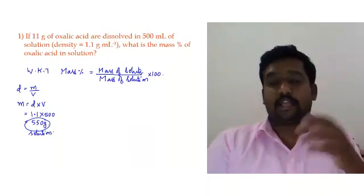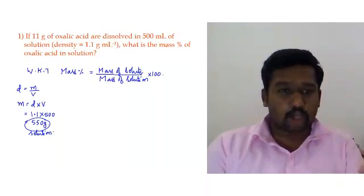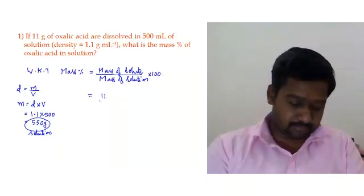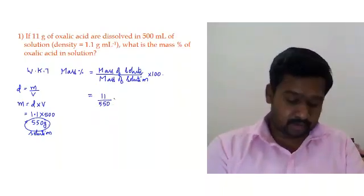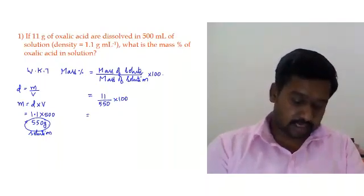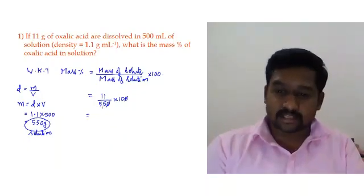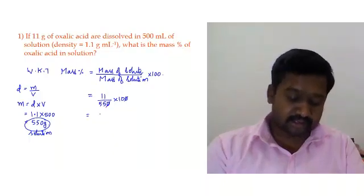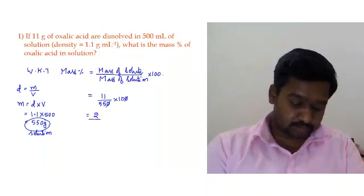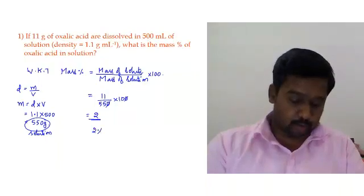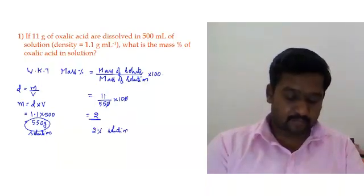This 550 grams is the mass of solution, which already includes the mass of solute. Substituting into the formula: mass percentage = 11 / 550 × 100. Simplifying, 11/550 × 100 = 110/55 = 2. So the mass percentage of the solution is 2%, or a 2% solution by mass.